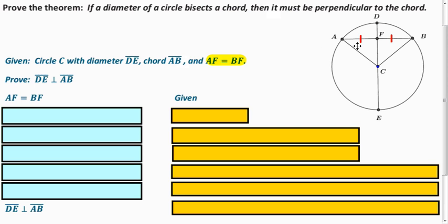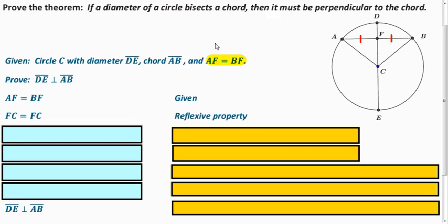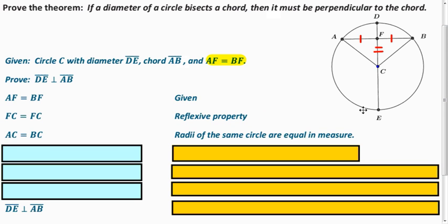So to show these are congruent, what else do we know is the same in both these triangles? Well, FC is in both of them, so we can use the reflexive property. So we apply reflexive property right here. And what else is the same in both triangles? Well, AC equals BC because they are both radii, so they have the same measure.